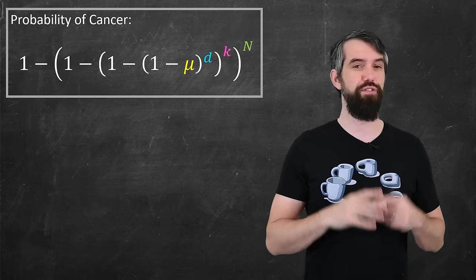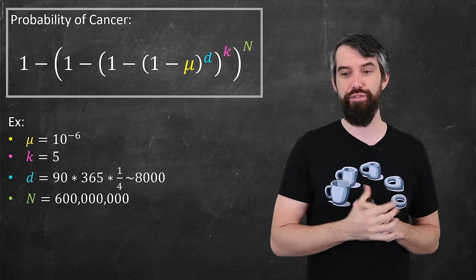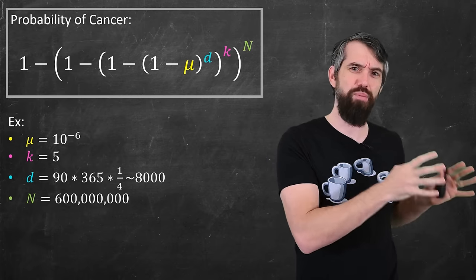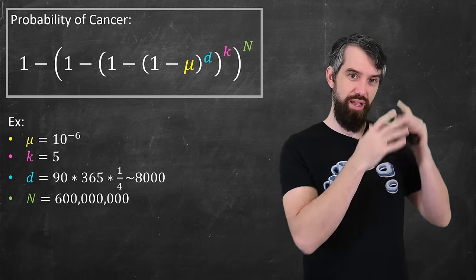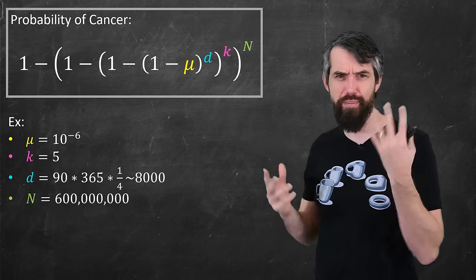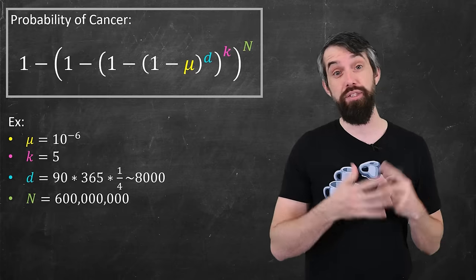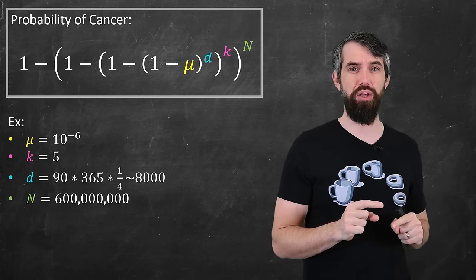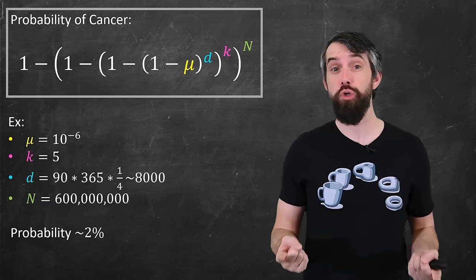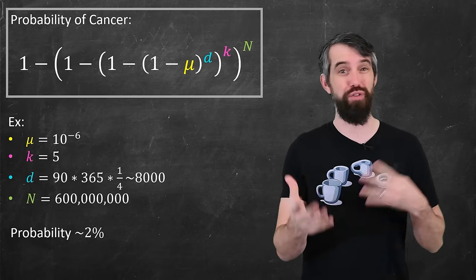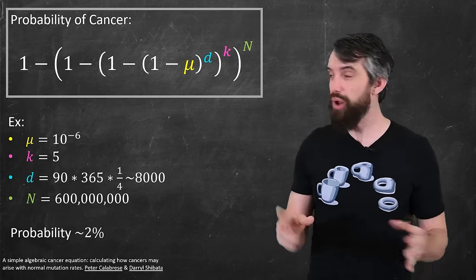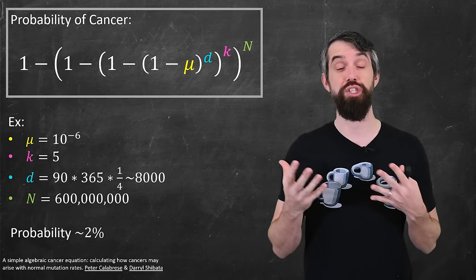Okay, let's work this out in a specific example. If you set mu to be 10 to the minus 6, k equal to 5, I've done a number of divisions which basically says there's a division once every four days. So if an animal lives for 90 years, which some whales do and some humans do, then 90 years times 365 days per year and then one division every four days gives the number around 8,000. And then finally we'll say there's 600 million cells. This number of cells was specifically looking for humans at the number of stem cells in the colon. So plug in the formula and you get a value of about 2%, which is actually pretty good. The numbers of colorectal cancers reported by the American Cancer Society is a number maybe like 5.3% chance of getting it at some point in your lifetime. This general model and these specific numbers come from this paper from Calabrese and Shavada. I'll put the link down in the description.